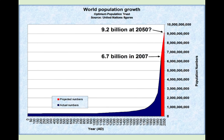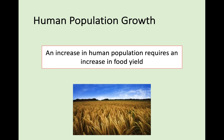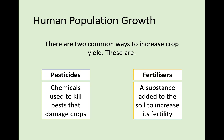One of the problems with having so many humans on Earth is the question of sustainability, and one of the key things is how are we going to feed them. An increase in human population requires an increase in food yield — yield being the volume of food that you grow or harvest. There are two ways we can try to cope with this: pesticides and fertilisers.